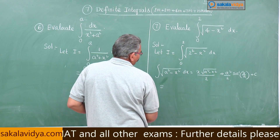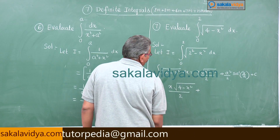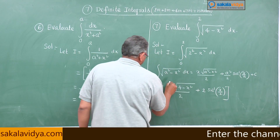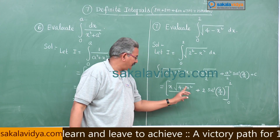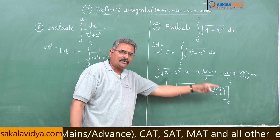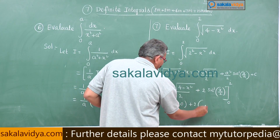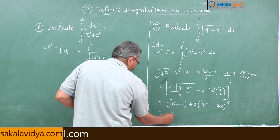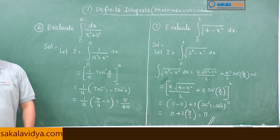Applying the formula: x times root(4 minus x squared) by 2 plus 4 by 2 times sin inverse (x by 2), with limits 0 to 2. Substituting the upper limit 2: root(4 minus 4) equals 0, so the first term is 0. Substituting lower limit 0: first term also equals 0. We are left with 2 times (sin inverse 1 minus sin inverse 0), which equals 2 times (π/2 minus 0), giving the answer π.